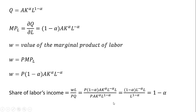Now it's just a matter of simplifying. The P terms cancel, the capital A term cancels, the K terms cancel, and in the last step all the L terms nicely cancel, and you're left with the share of labor's income equaling 1 minus alpha. I hope you found this video helpful.